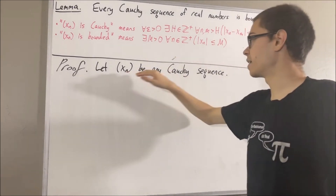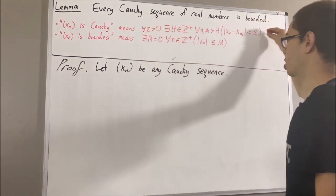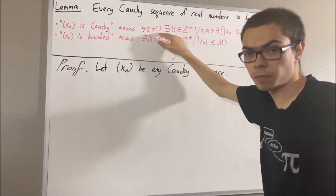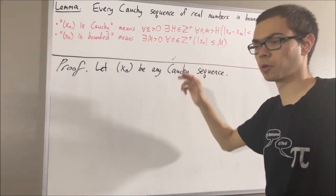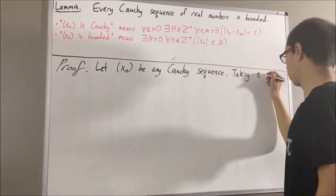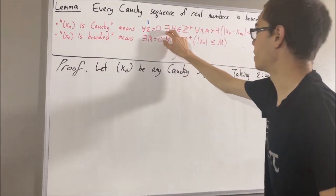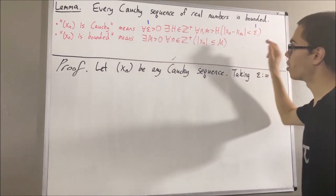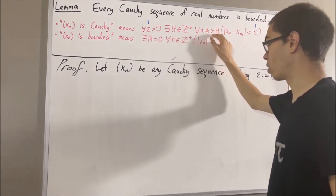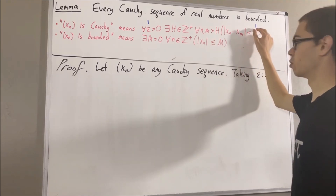Now to start, since xn is a Cauchy sequence, the Cauchy condition holds for every positive real number, so in particular it must work for epsilon equal to 1. Taking epsilon to be 1, there is some positive integer h such that for all positive integers n and m greater than h, the absolute value of xn minus xm is less than 1.